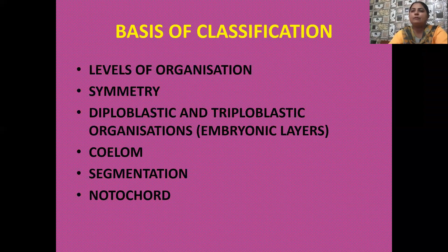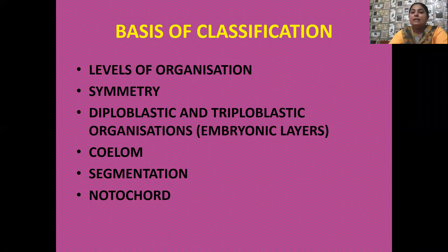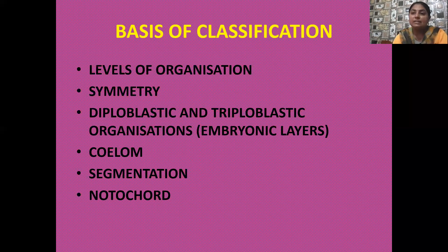To summarize the levels of organization: cellular level of organization is seen in phylum Porifera (sponges); tissue level of organization is seen in phylum Coelenterata (Cnidaria); organ level of organization is seen in phylum Platyhelminthes and phylum Aschelminthes; and organ system level of organization is present in phylum Annelida, Arthropoda, Mollusca, Echinodermata (spiny skinned animals), and all classes of phylum Chordata.